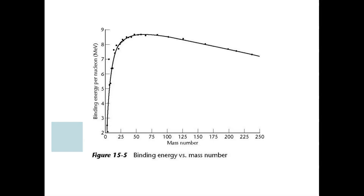The strong force only works over a very small distance. The electrostatic force is weaker but works over a greater distance — similar to how gravity is even weaker than the electrostatic force yet can work over galactic distances. We're affected by the Sun's gravitational pull even though we're so far away. So a weaker force can work over a longer distance.